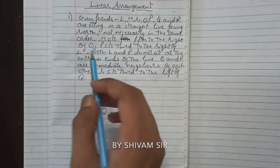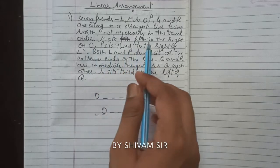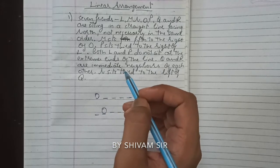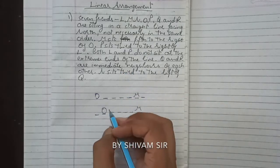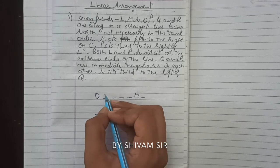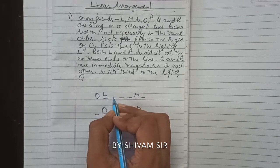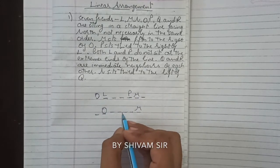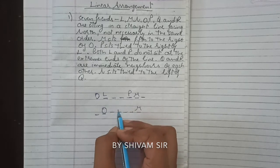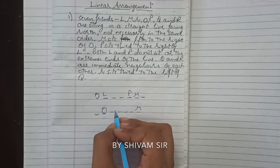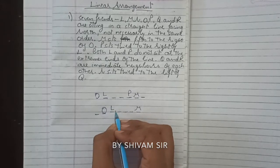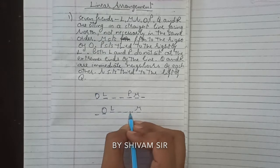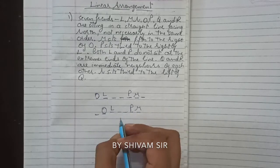Next clue: P sits third to the right of L. So if L is placed here, third to the right — 1, 2, 3 — P will be here. Or if L is placed one position further, 1, 2, 3 — P will be here. So there are two possibilities for L and P as well.